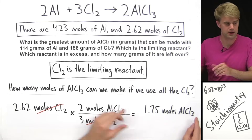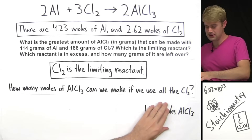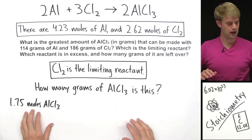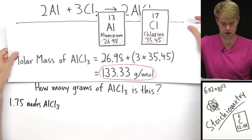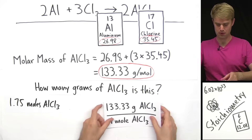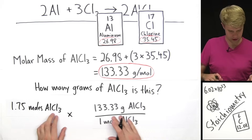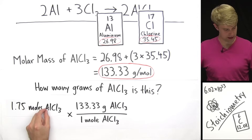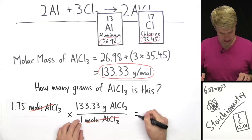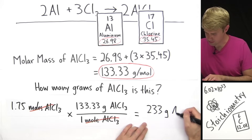We're not quite done with this part of the problem because we're asked for the greatest amount of AlCl₃ in grams, not in moles. So we've got to take 1.75 moles and convert to grams. We need the molar mass of AlCl₃, which is 133.33 grams per mole. We express it as a conversion factor — moles AlCl₃ on the bottom cancels out — and doing this times this divided by this gives us 233 grams of AlCl₃.